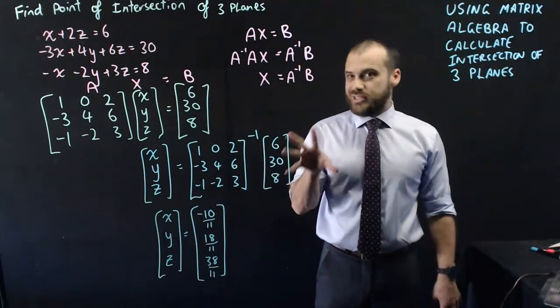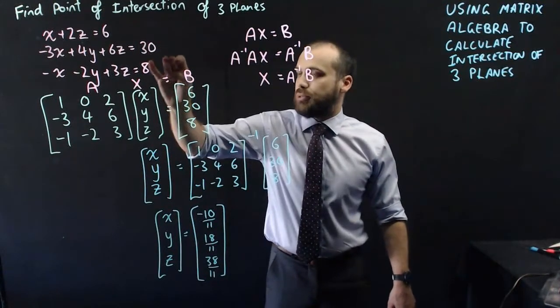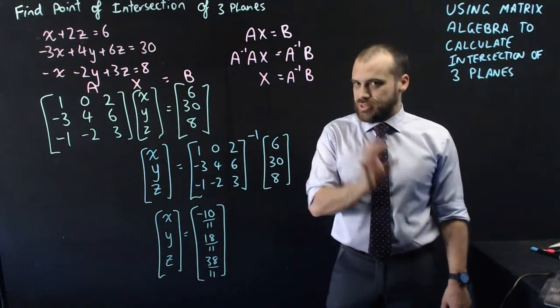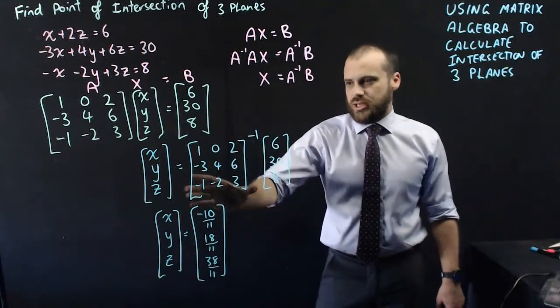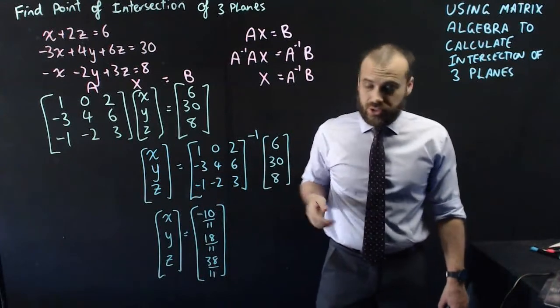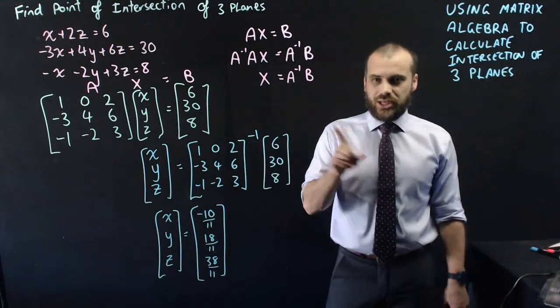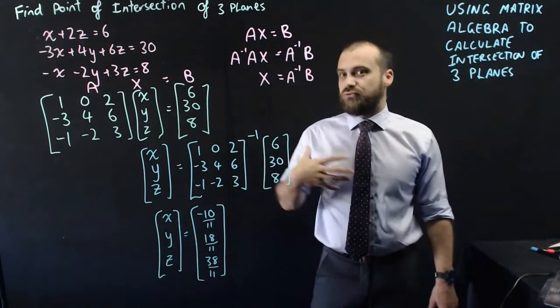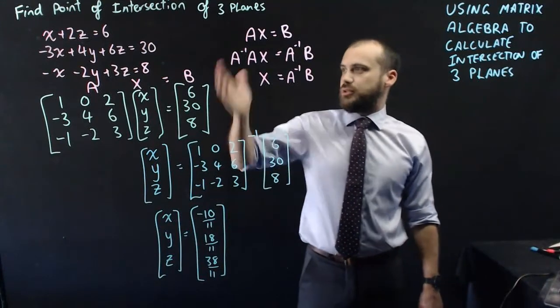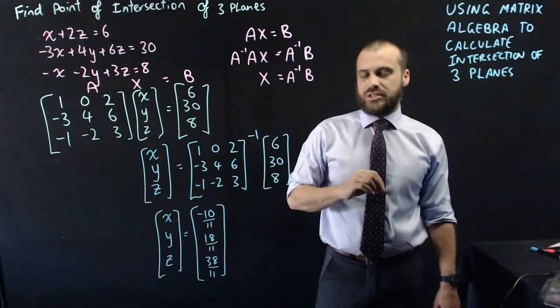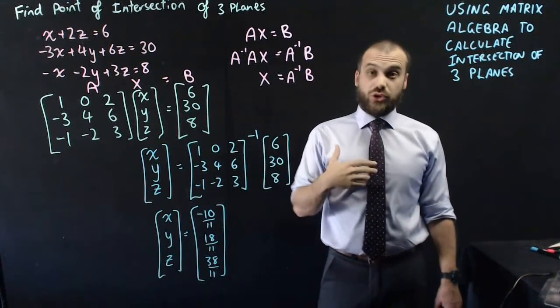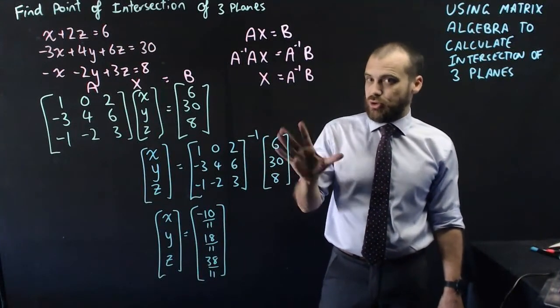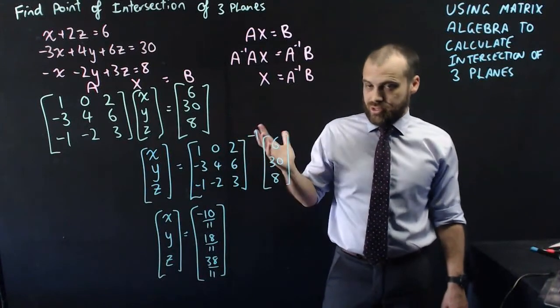Now, cannot stress enough, this will only work if your 3 planes meet in a single point. If your 3 planes don't meet in a single point, when you get to this stage here and you ask your calculator to find you the inverse of this, your calculator will say no, there is no inverse of that, and then it cannot move further. So this will only work if there is a point of intersection. If there isn't a point of intersection or if you're not sure if there's a point of intersection, then you shouldn't use this method because you'll only waste time or not be able to get the answer at all.